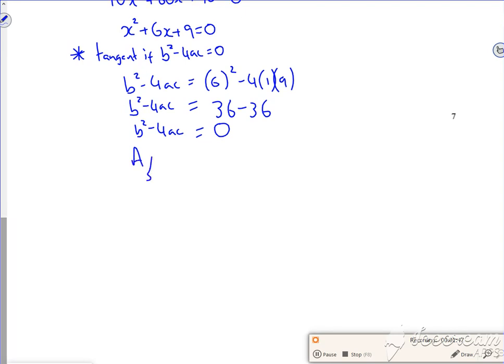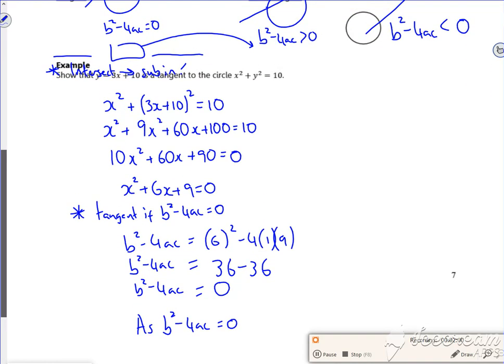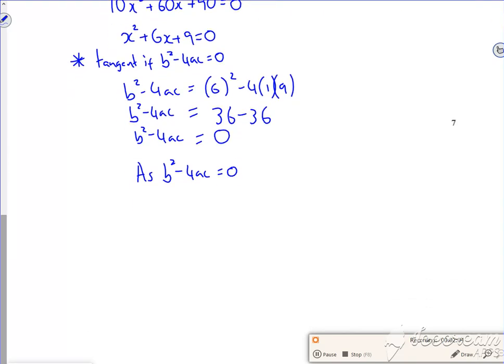So as... oh I know, the board just moved now, sorry. As b squared minus 4ac is equal to zero, let's go back to the question. Well the whole board's moved. 3x plus 10 is a tangent.